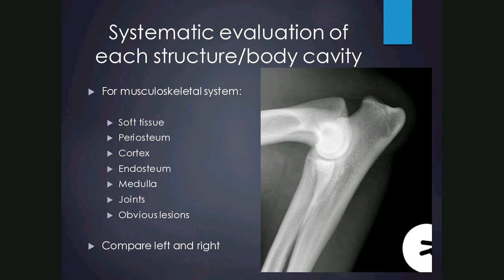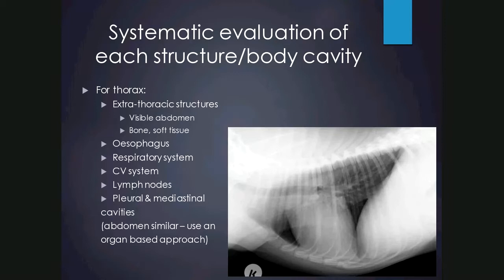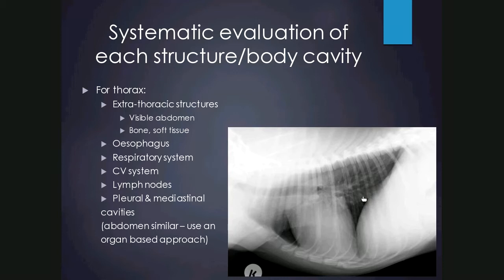For the thorax, start on the outside looking at extra-thoracic structures such as the cranial abdomen and musculoskeletal system and soft tissues. Then use an organ-based approach: look for the oesophagus, which is usually not seen unless gas-filled or containing fluid, a foreign body, or ingesta. Evaluate the respiratory system — trachea, lung parenchyma, and bronchi. Cardiovascular structures such as the heart, aorta, and caudal vena cava. Lymph nodes are not normally seen; if visible they are enlarged. The pleural and mediastinal cavities are potential spaces not visualised unless they contain gas or fluid.